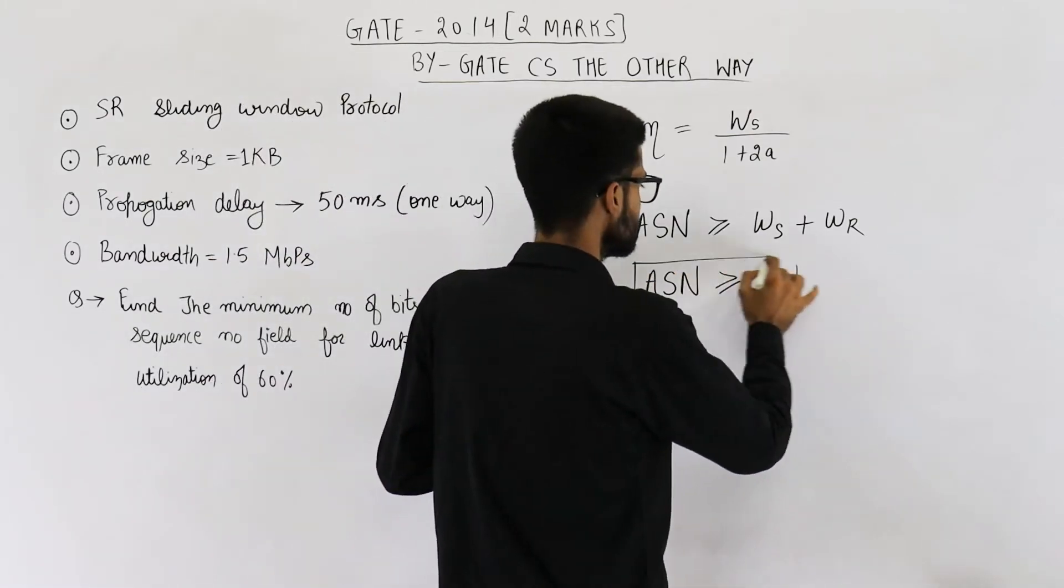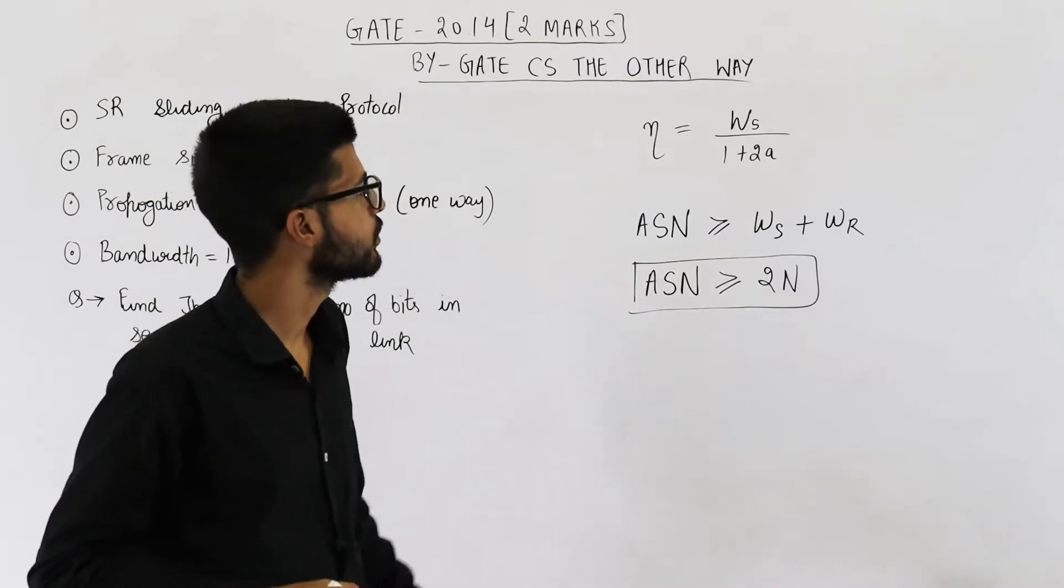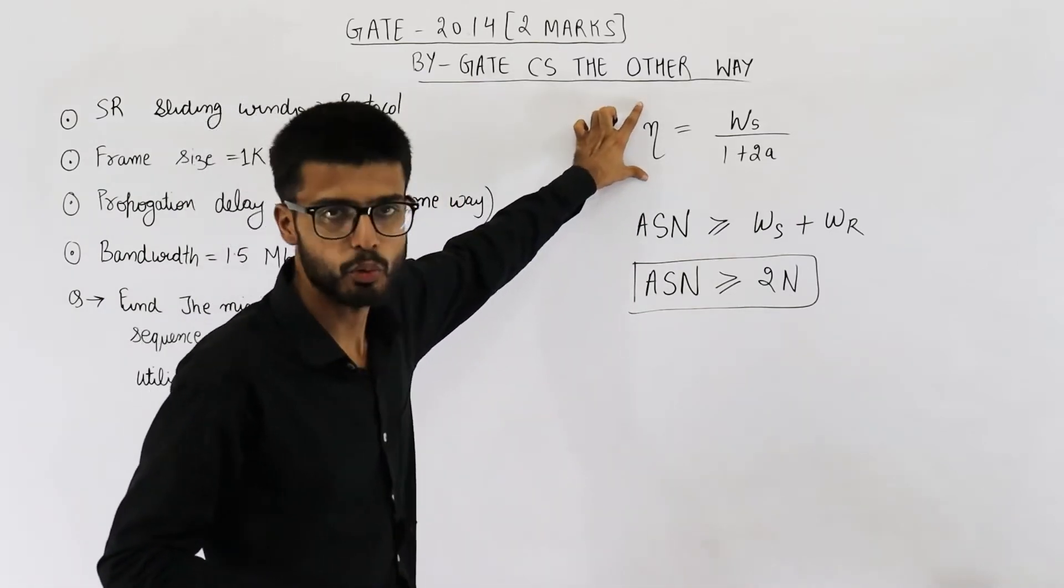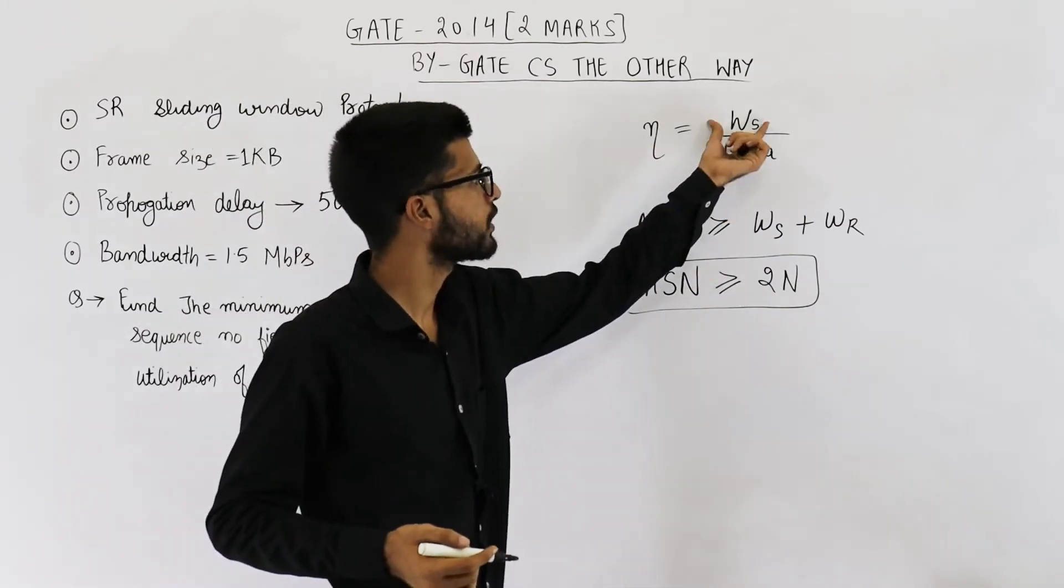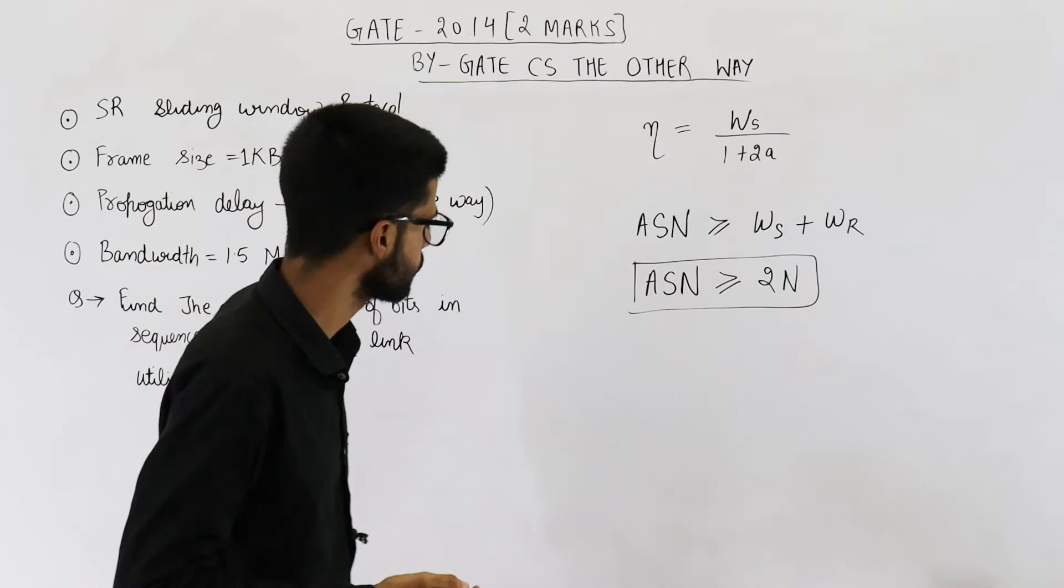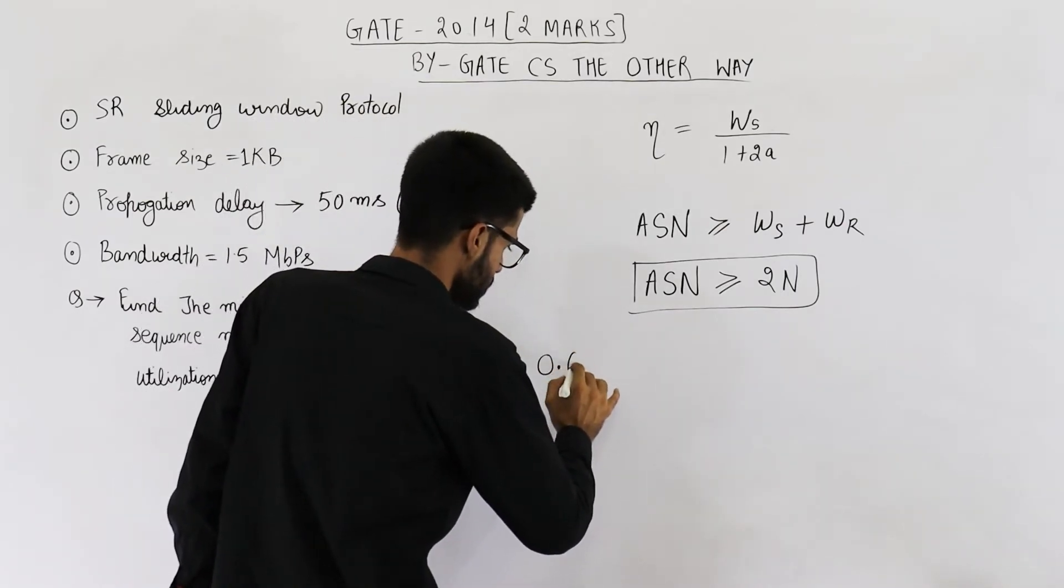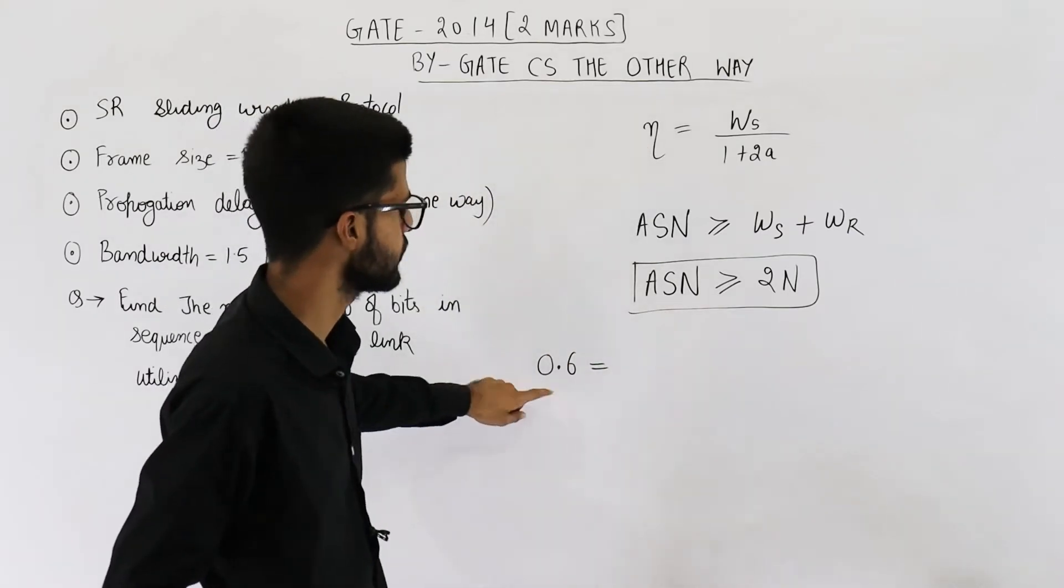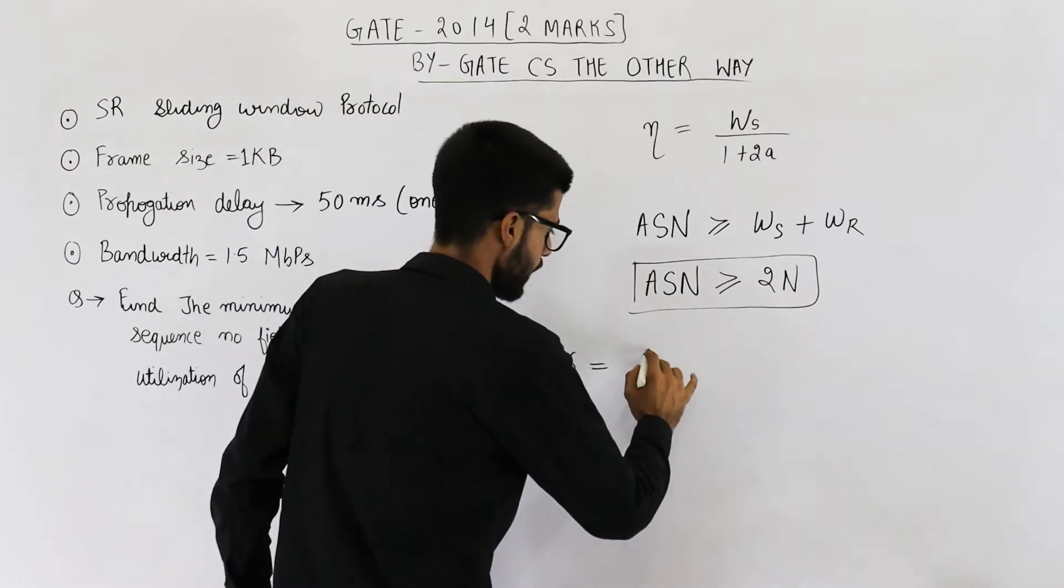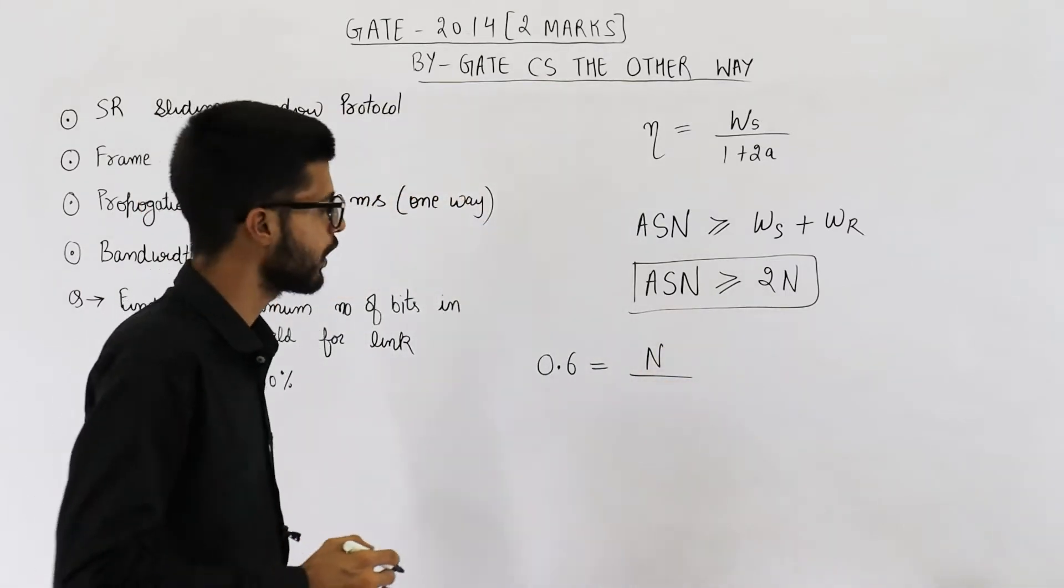Now let's find out what is the sender window size from this equation. Just substitute efficiency is equal to 60% and find out what is sender window size. So they are saying efficiency is 60%. That means 0.6, this is 0.6 is equal to n. Suppose sender window size is n divided by 1 plus 2a.